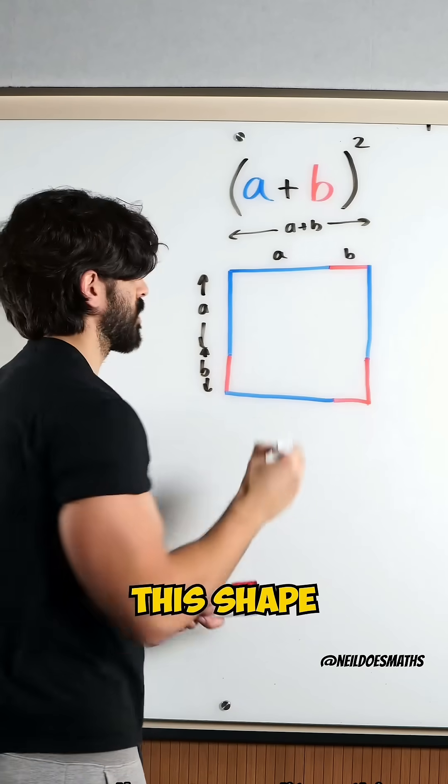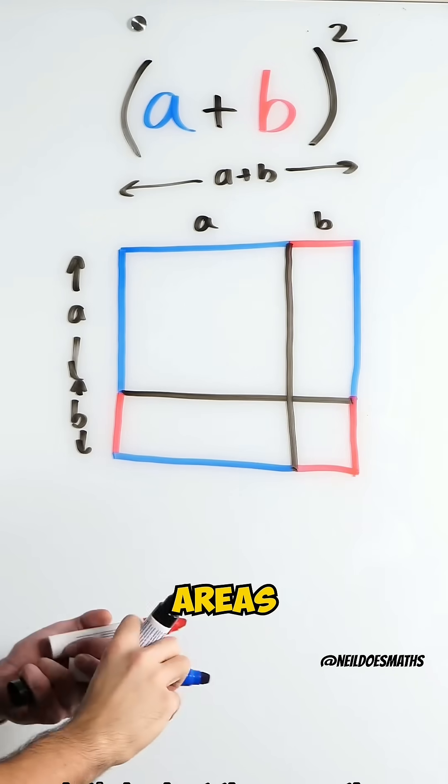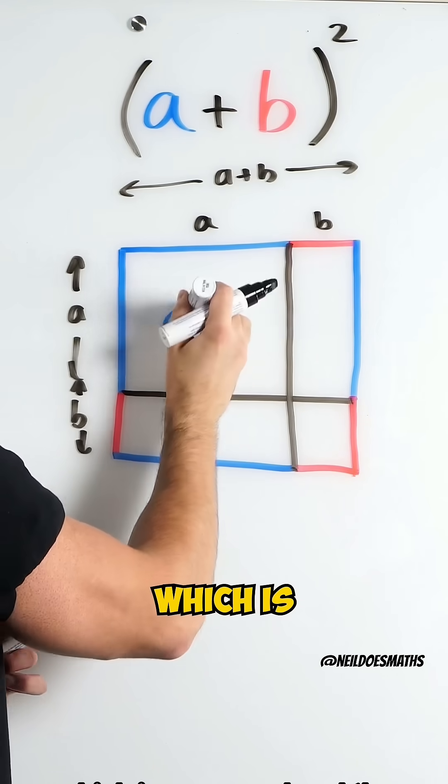Now I'm going to split up this shape horizontally and vertically. Let's look at the areas. The area of this square is A times A, which is A squared.